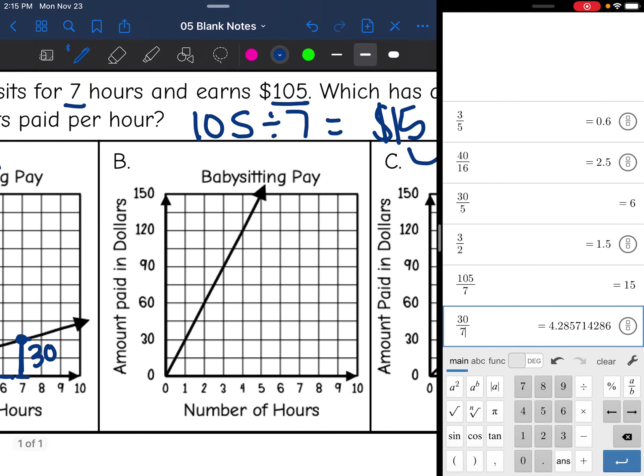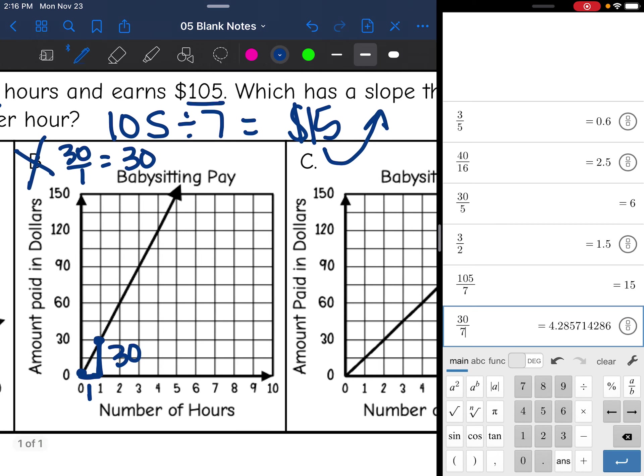Graph B, here's a perfect corner, here's a perfect corner. So the rise of this one is from 0 to 30. So it's 30 and the run is 1 and 30 over 1 is 30. It does not match our slope of 15. Let's look at this one right here.